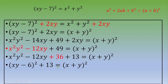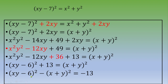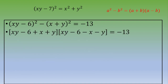Rearranging, moving all terms to one side: (xy minus 6) squared minus (x plus y) squared equals negative 13. On the left we have a difference of squares — a squared minus b squared equals (a plus b)(a minus b) — so applying this gives: (xy minus 6 plus x plus y) times (xy minus 6 minus x minus y) equals negative 13.